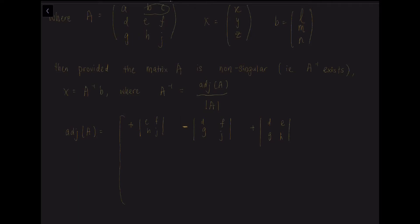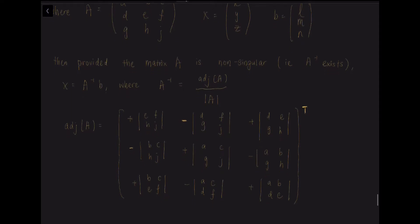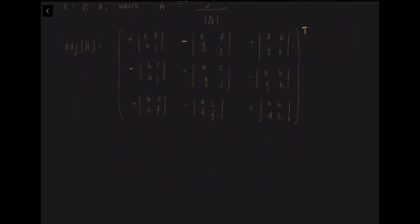The first one will be positive, and moving to the right, we alternate negative and positive all the way to the end. For adjoint A, this whole matrix needs to be transposed at the end. In a real exam, you don't have to write out all these little details — you can do it in your head and write out the answers directly to save time. I will explain the transpose later in the example.